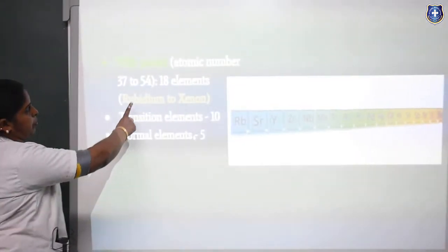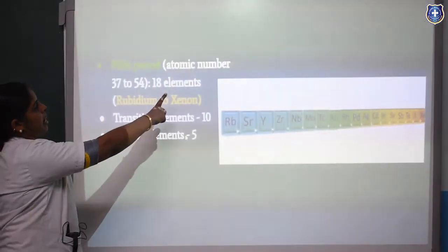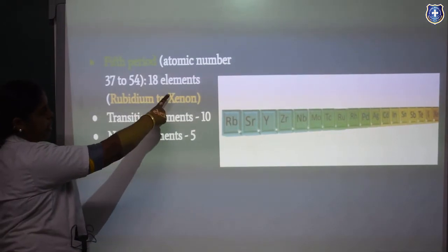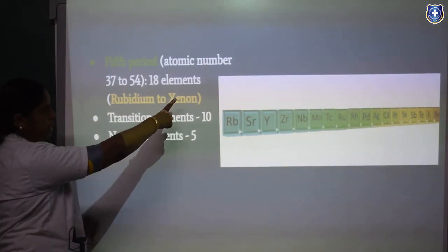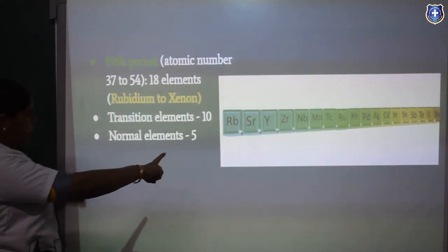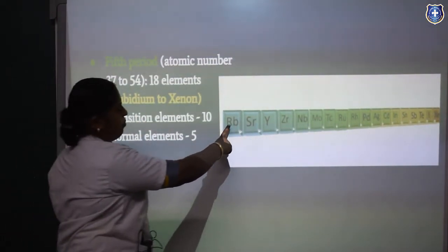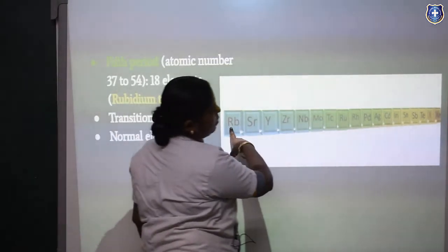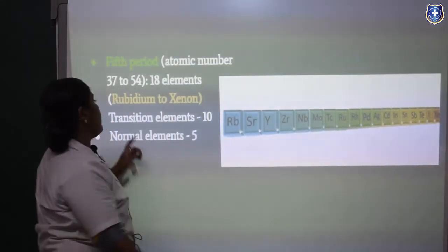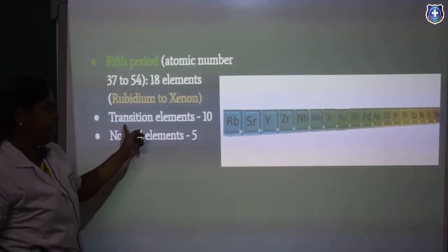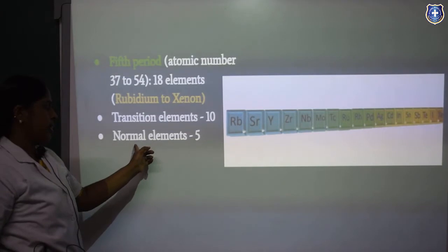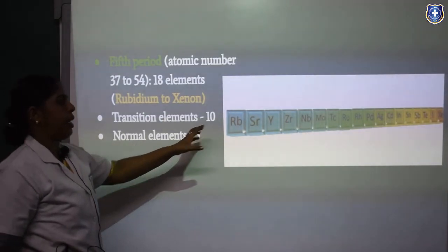The 5th period covers atomic numbers 37 to 54. Here also 18 elements are present, from rubidium to xenon, including 10 transition elements and 5 normal elements.